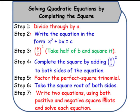The next part of this lesson is solving quadratic equations by completing the square. There are 7 steps. Step 1: divide through by a. Step 2: write the equation in the form x squared plus bx is equal to c. Step 3: take half of b and square it. Step 4: complete the square by adding half of b squared to both sides. Step 5: factor the perfect square trinomial. Step 6: take the square root of both sides. Step 7: write two equations using both positive and negative roots and solve each equation.